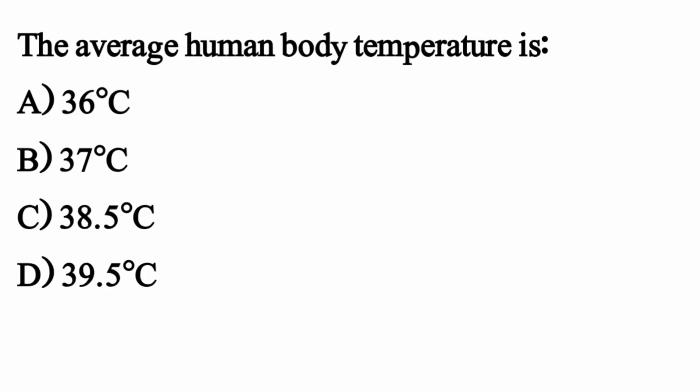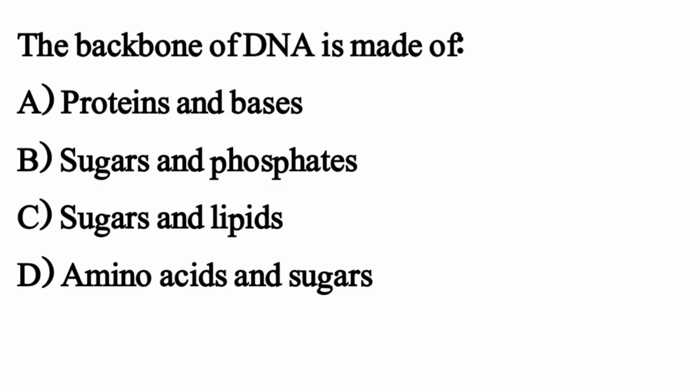The average human body temperature is — the right option is option B: 37 degrees centigrade. The backbone of DNA is made of — the right option is option B: sugar and phosphates.